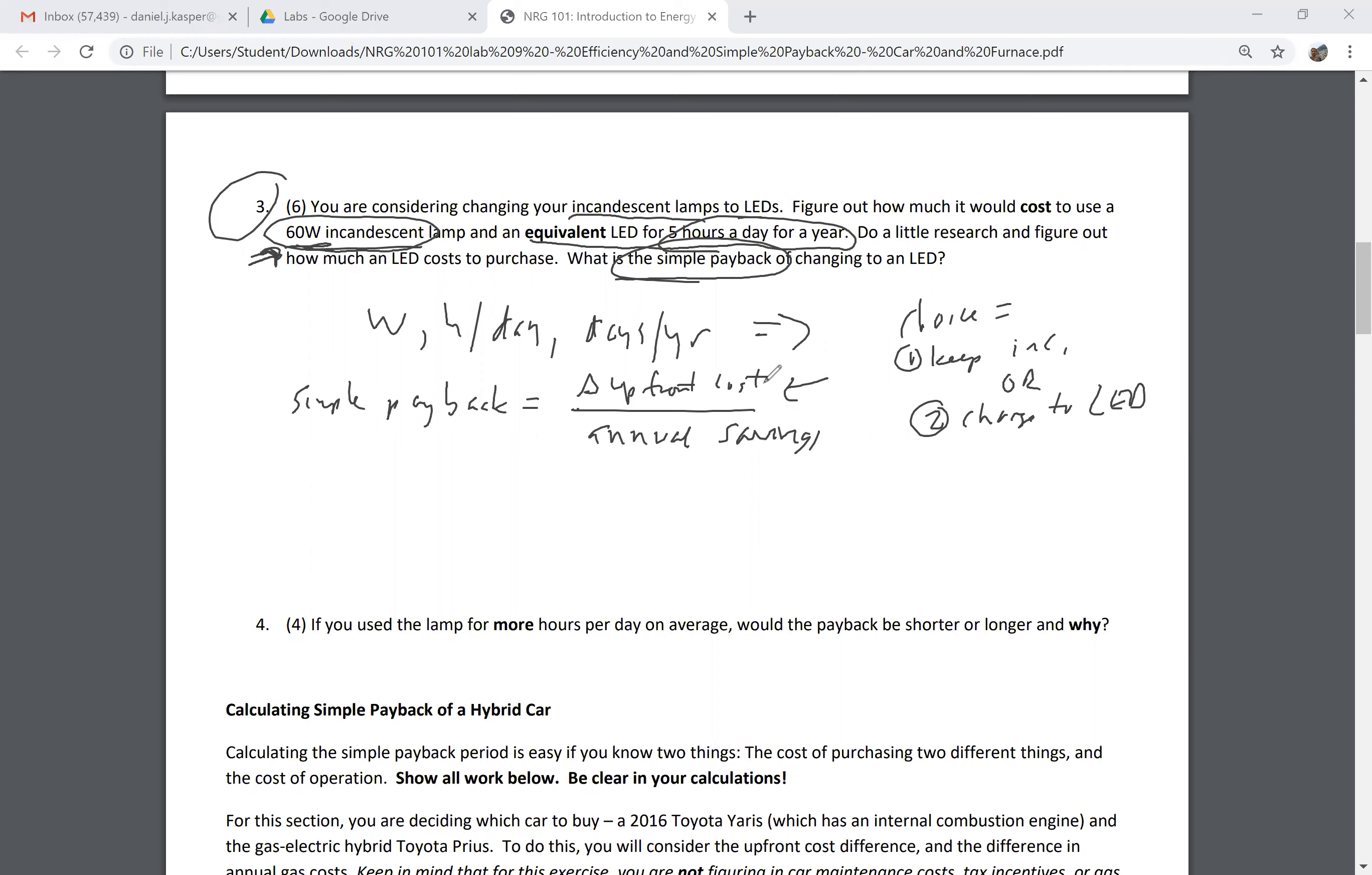The upfront cost difference is the difference between those two choices in terms of my out-of-pocket costs. If I keep my incandescent, choice number one, my upfront cost is zero dollars because I already have it. Choice number two, my upfront cost, you can look this up, is about two dollars per LED.